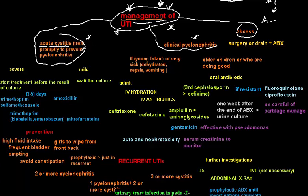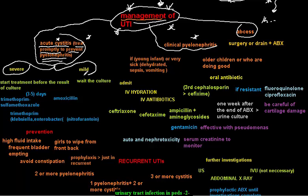Let's start with acute cystitis. The first rule is you have to treat promptly — as fast as possible — to prevent the progression of acute cystitis to pyelonephritis. Treatment depends on whether the condition is severe or mild. In severe cases we can start treatment even before the culture result; you cannot wait.